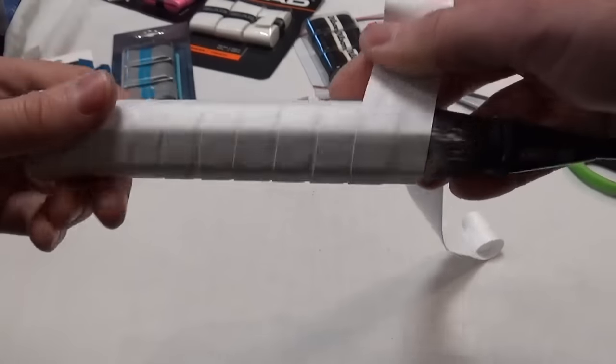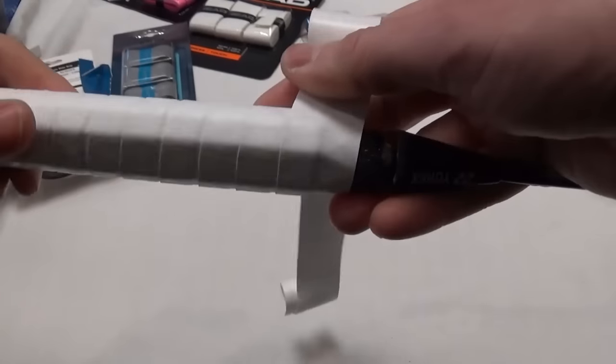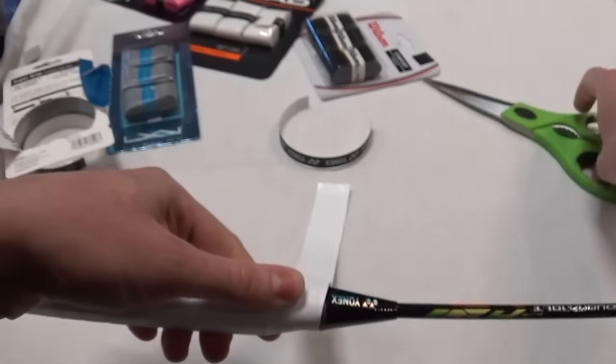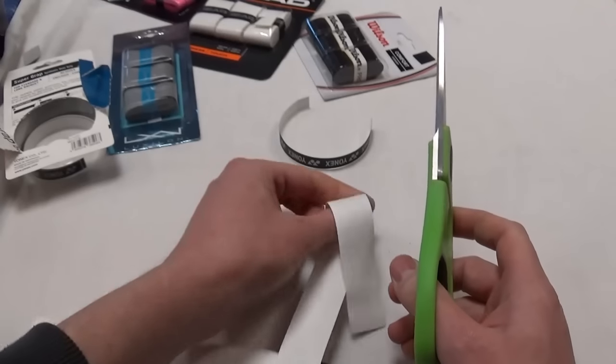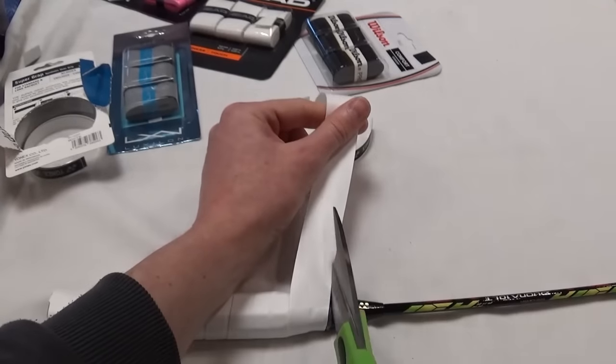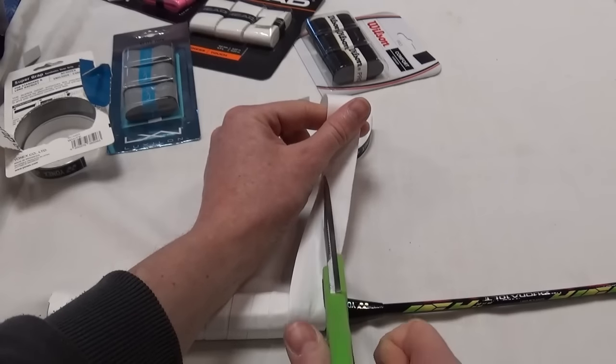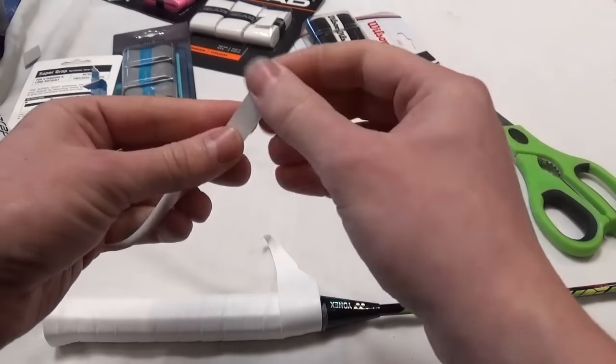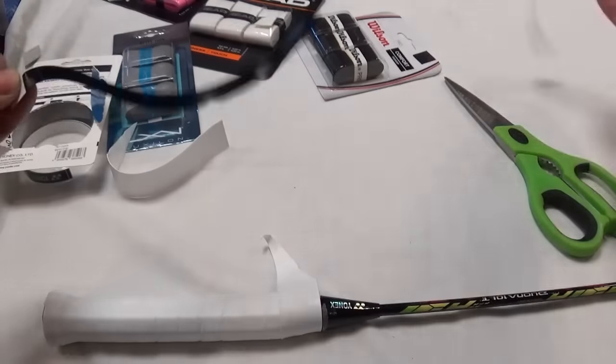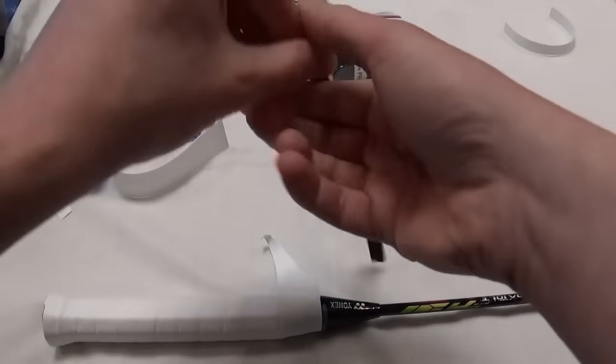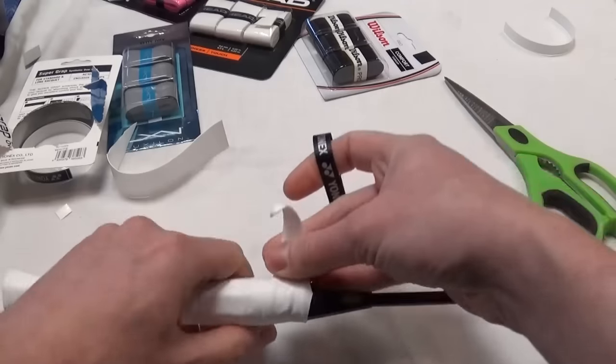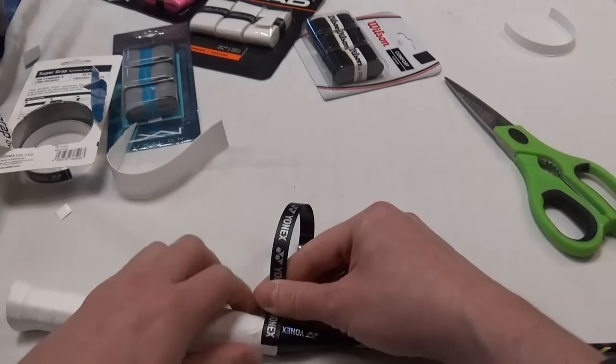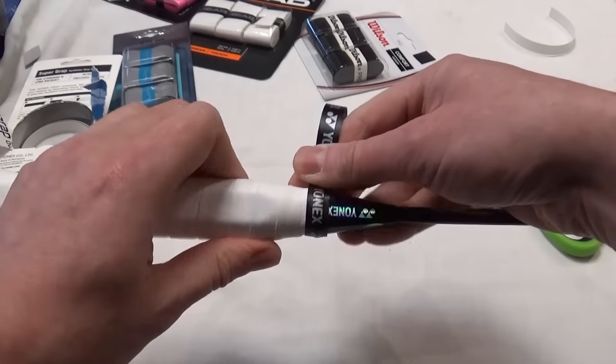So I'm overlapping almost entirely here. So we've got a double layer of over grip. We're getting up to the top. So there we go. And the same as always just cut off in line with the cone. Get your bit of tape and nice finish round the top.